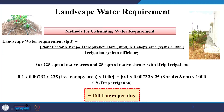The last component was the landscape water requirement. Using the equation considering plant factor, vapor transpiration rate, canopy area, and irrigation system efficiency — based on the total vegetated area, the total landscape irrigation water requirement can be calculated, which in this case is 180 liters per day.